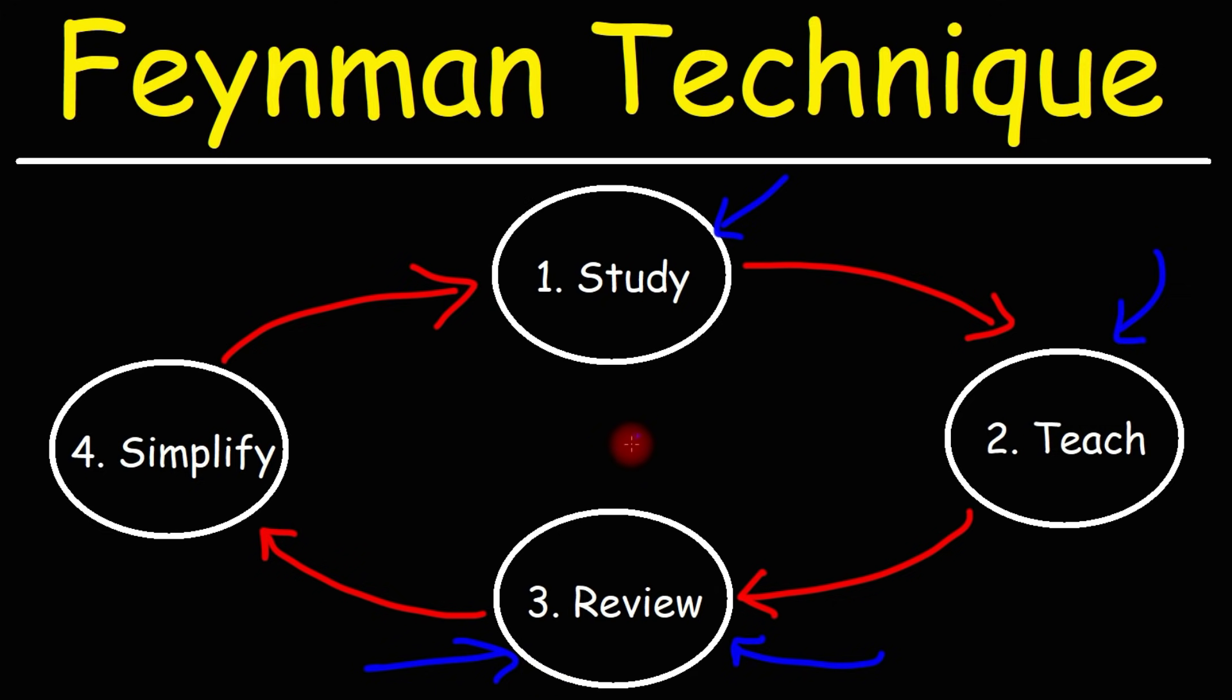Number one, you want to study it. Number two, teach it to others. Number three, once you've identified gaps in your knowledge, go back and review the material. Number four, simplify your explanation. Develop the ability to explain what you learn in such a simple way that anyone with a limited vocabulary can understand.